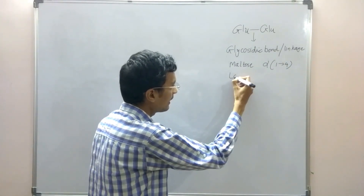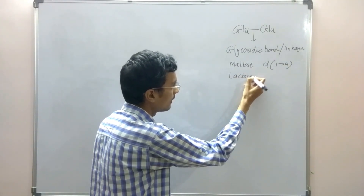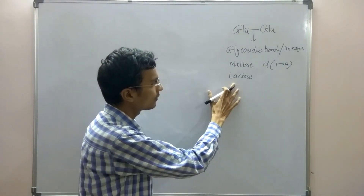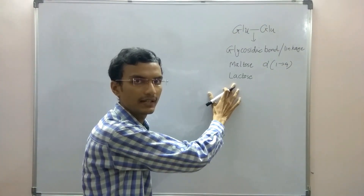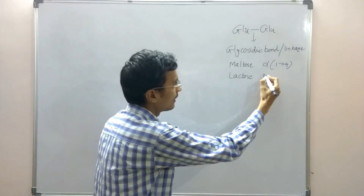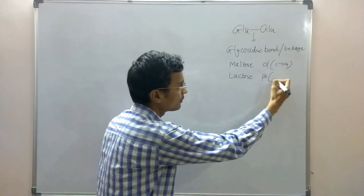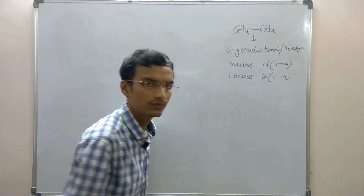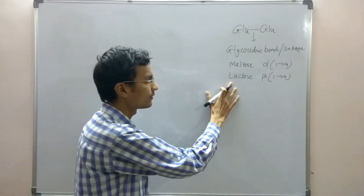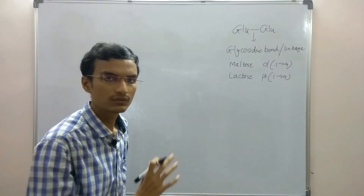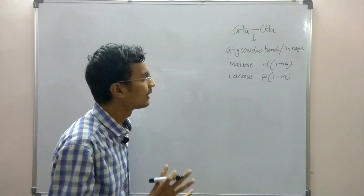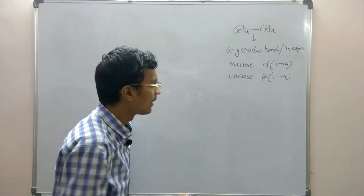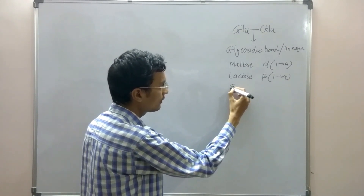The second disaccharide is lactose. In lactose, the first monomer is galactose and the second is glucose. Galactose and glucose join to each other with a beta-1-4 glycosidic bond.